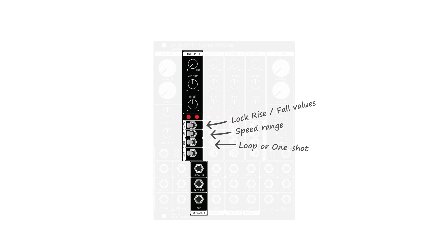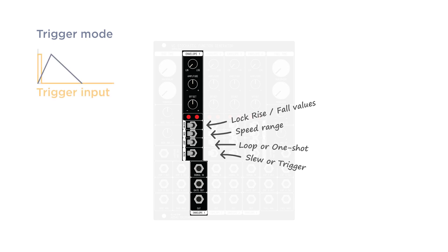With the third switch, you can set the channel either in looped mode — becoming an oscillator or LFO — or in one-shot mode to create triggered or gated envelopes. The final switch sets the channel in either slew or trigger mode. In trigger mode, whenever the module receives a high voltage, it will go through the full rise stage, and from there, if the input voltage is low, through the full fall stage back to zero. So when you use an actual trigger, it puts out an attack-decay envelope. But if you feed the channel a gate in this mode, it becomes an attack-hold-decay envelope.